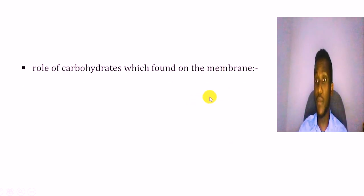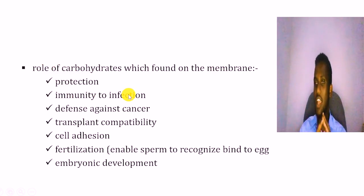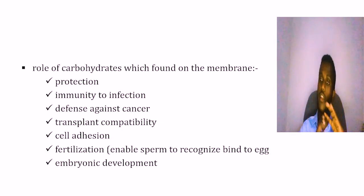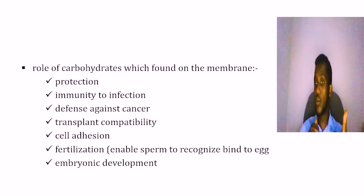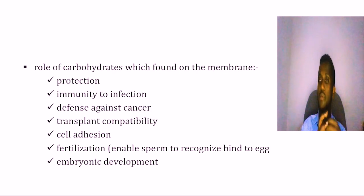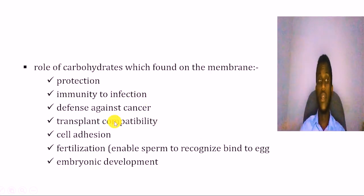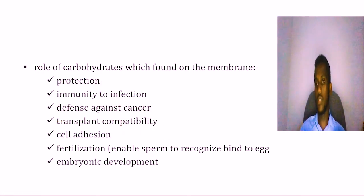The function of carbohydrates in the cell membrane includes protection of the cell, prevention of dehydration, and involvement in the immune system. The carbohydrates act almost like antigens — if the immune system recognizes them, they play a role in immune responses, cell adhesion, and anchoring purposes.